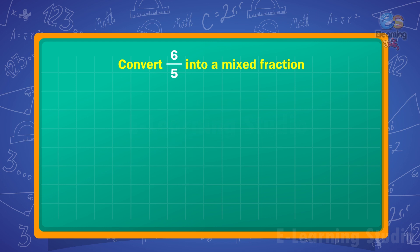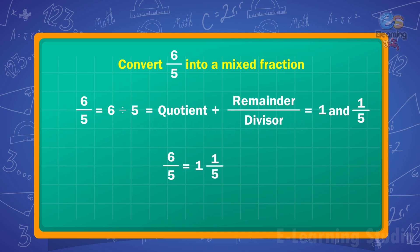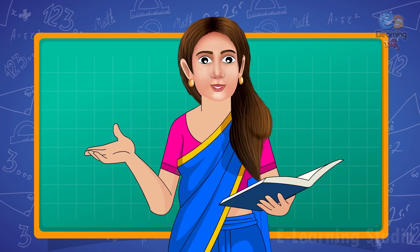That is, 6 upon 5 equals 6 divided by 5, which equals quotient plus remainder upon divisor, which equals 1 and 1 upon 5. Therefore, 6 upon 5 equals 1 and 1 upon 5. In the next example,